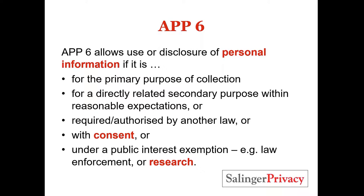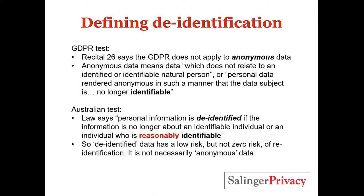If you can't meet those first three tests, you can either get the person's consent or look for one of a number of public interest exemptions, including national security, law enforcement, finding missing persons, and some research exemptions. Common privacy questions I get asked include: is this data even personal information? Is it personal information once it's been de-identified? And what does the research exemption say?